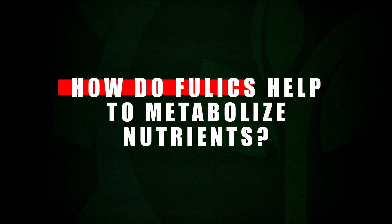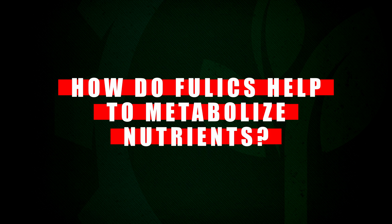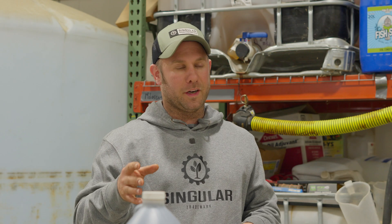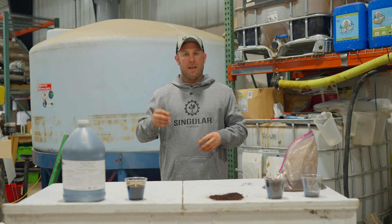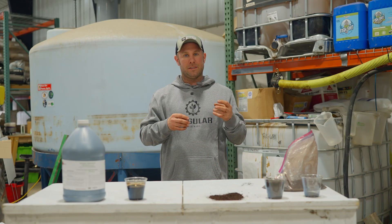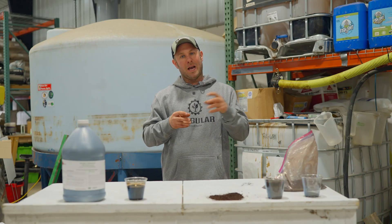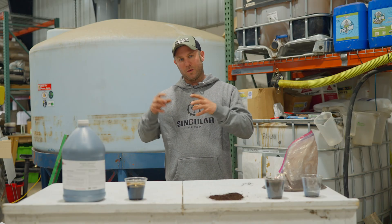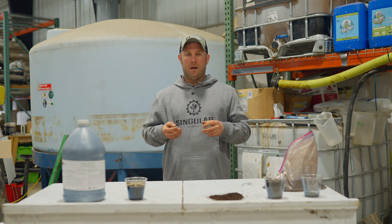The second topic we're going to cover is how fulvics help to metabolize nutrients. Fulvic is a very small molecule — it bonds and forms a complex that makes nutrients more soluble for the plant to be able to uptake.